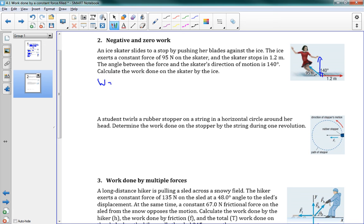Let's plug it in. We'll use our equation, w equals f delta d cosine theta. Nothing tricky, it's exactly the same equation. And we'll plug in the numbers, 95 newtons, delta d is 1.2 meters, cosine of 140 degrees. And this gives us a value of negative 87 joules.